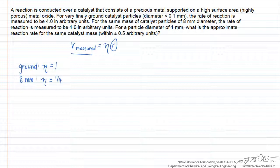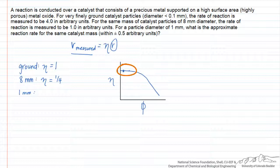For the 1 millimeter catalyst, we have to utilize the fact that the effectiveness factor can be plotted against the Thiele modulus. At low values of the Thiele modulus, the effectiveness factor is 1 — somewhere in that region is where we measure the effectiveness factor for the finely ground catalyst. As we increase the Thiele modulus, the effectiveness factor starts to decrease rapidly, reaching a value of 0.25 when the catalyst diameter is 8 millimeters.